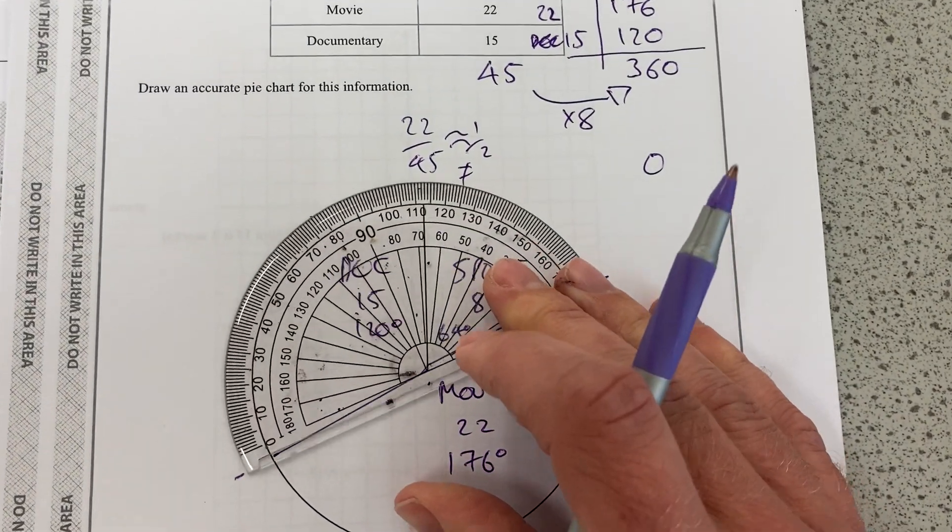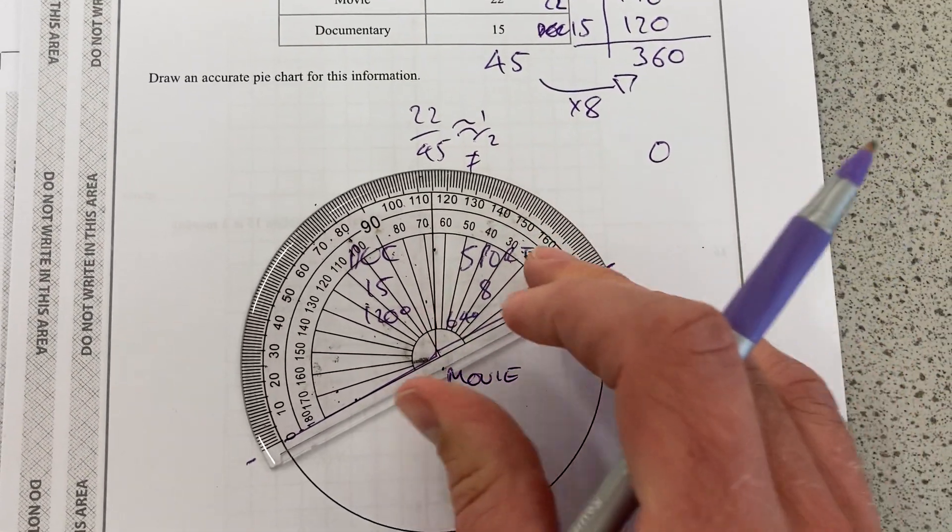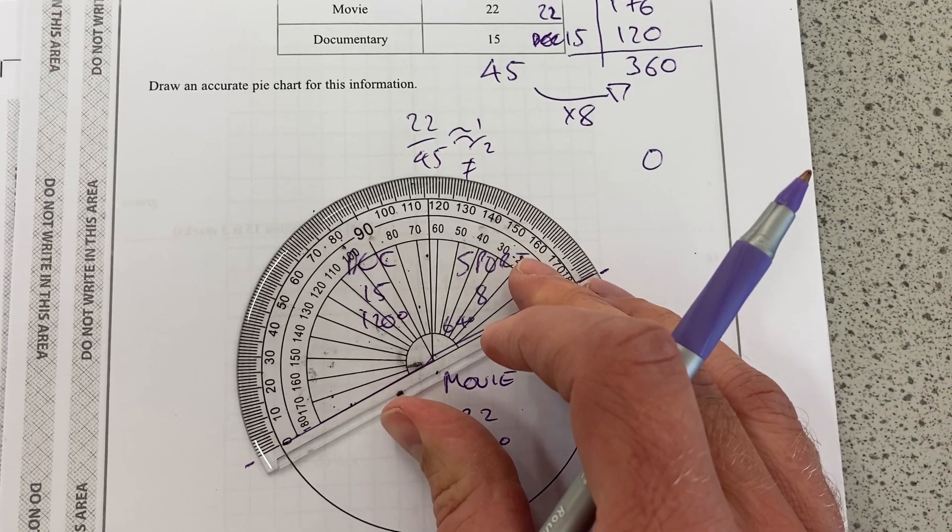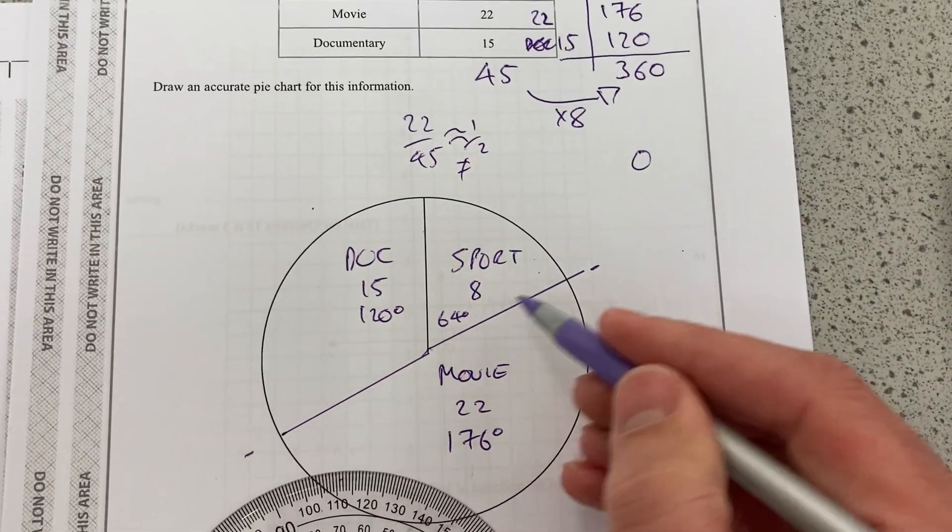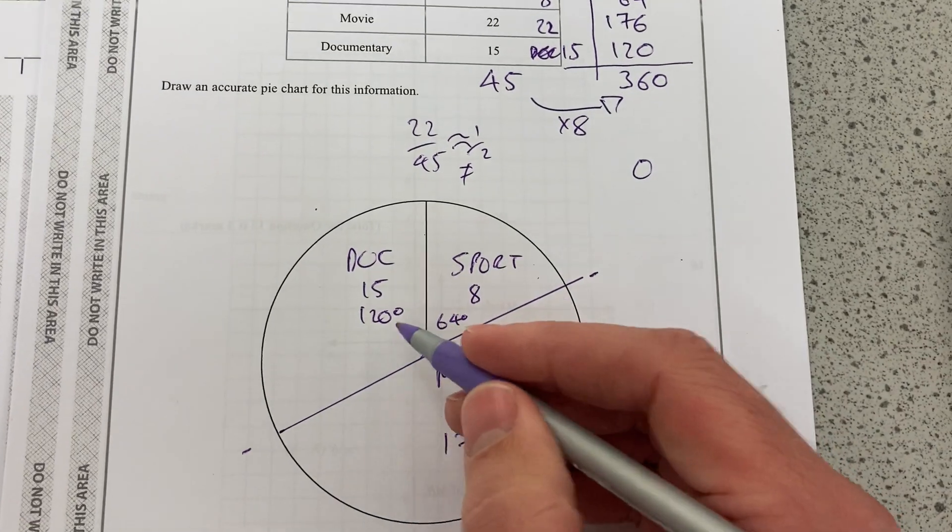And if everything's correct, then when you line that up, mine might be just out because I've just been off. Line that up, yeah. I'm just a bit out because I got my first one incorrect, but that should be 120 degrees.